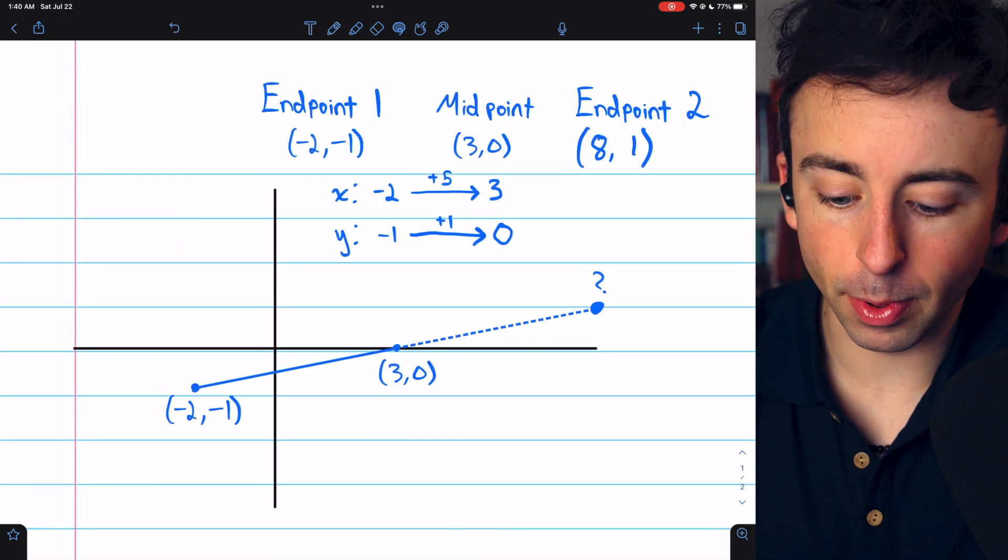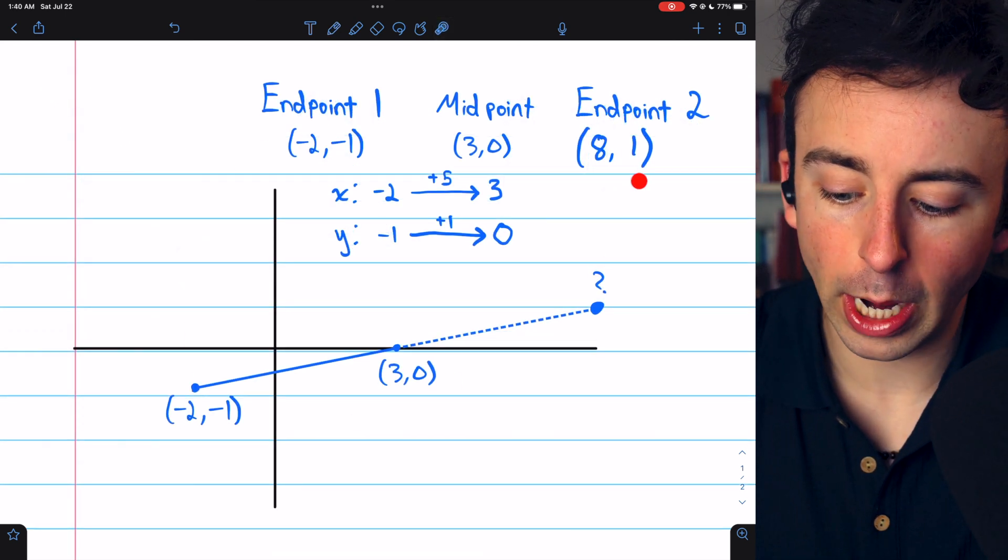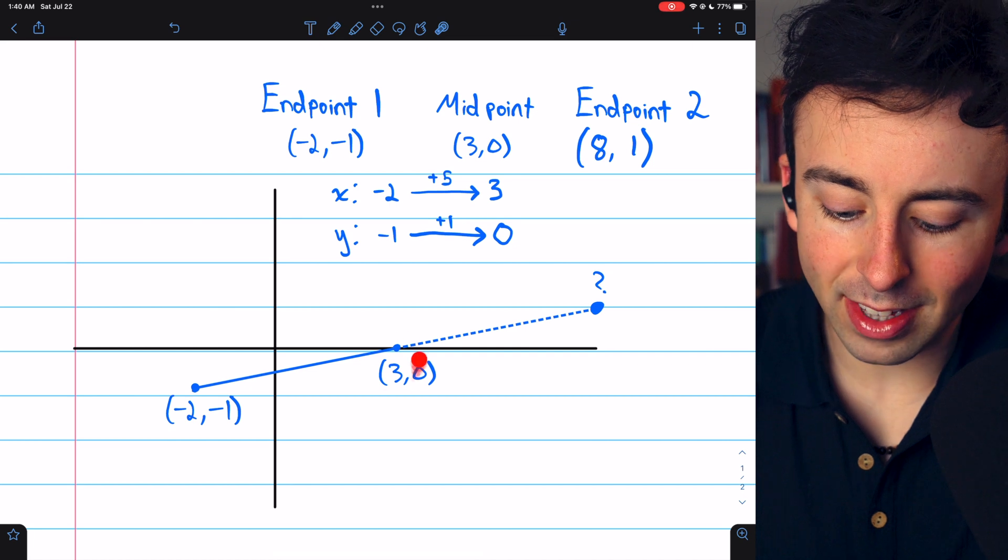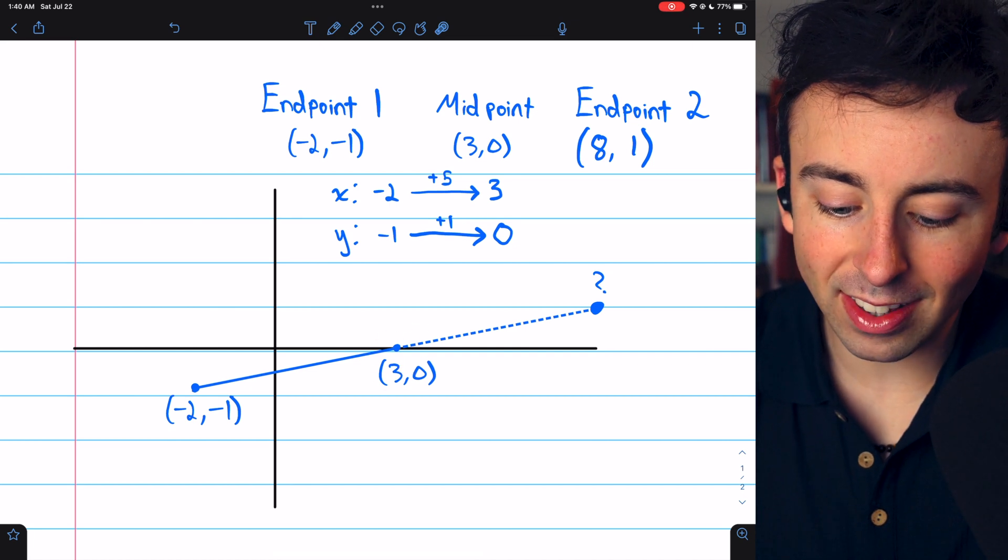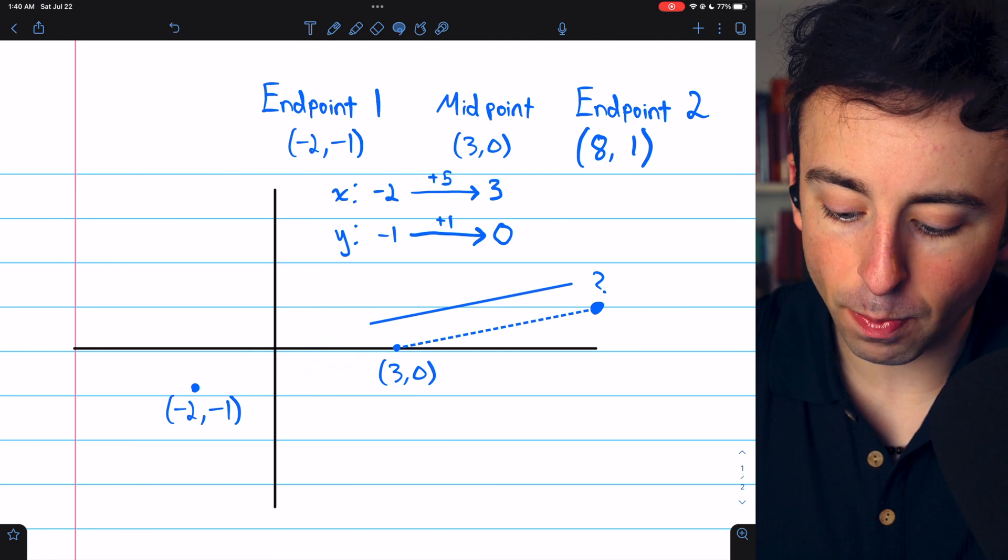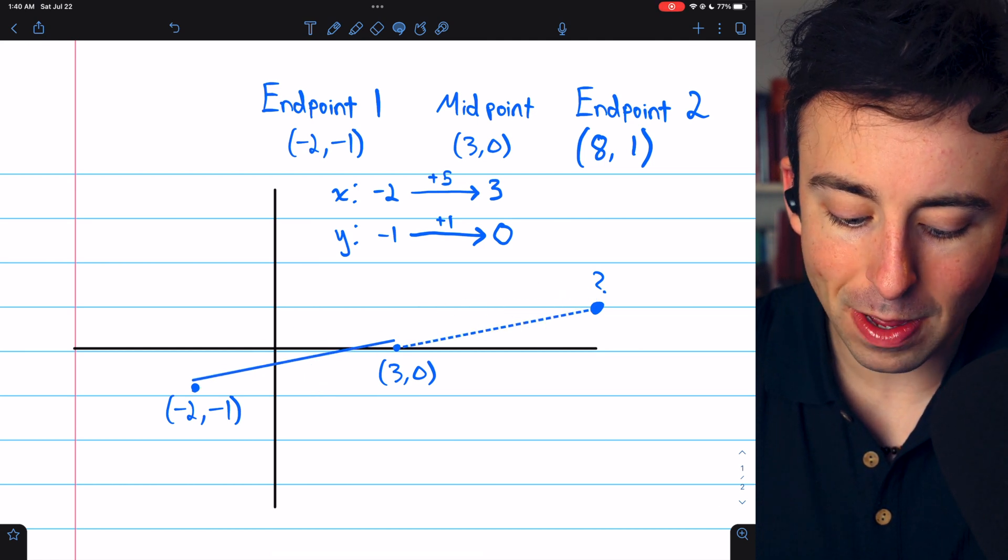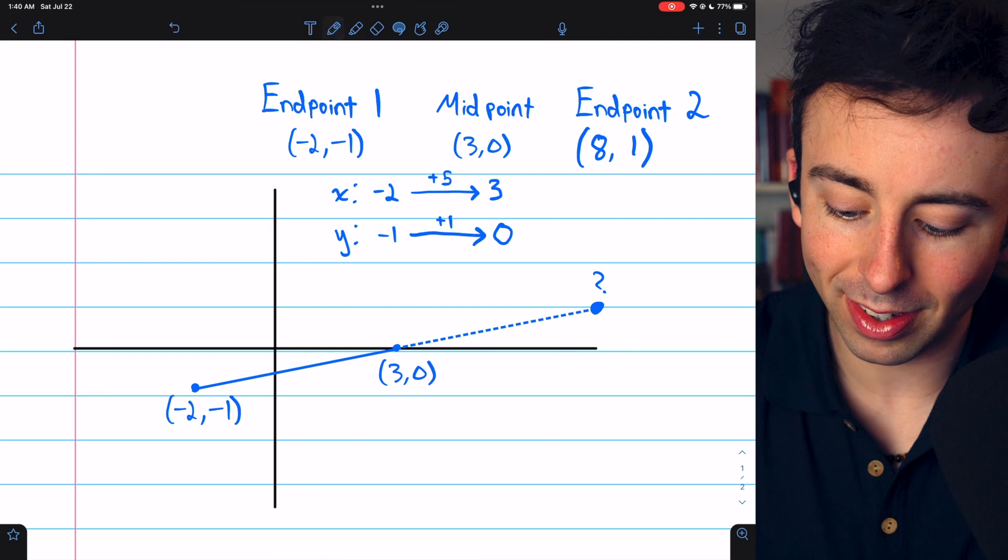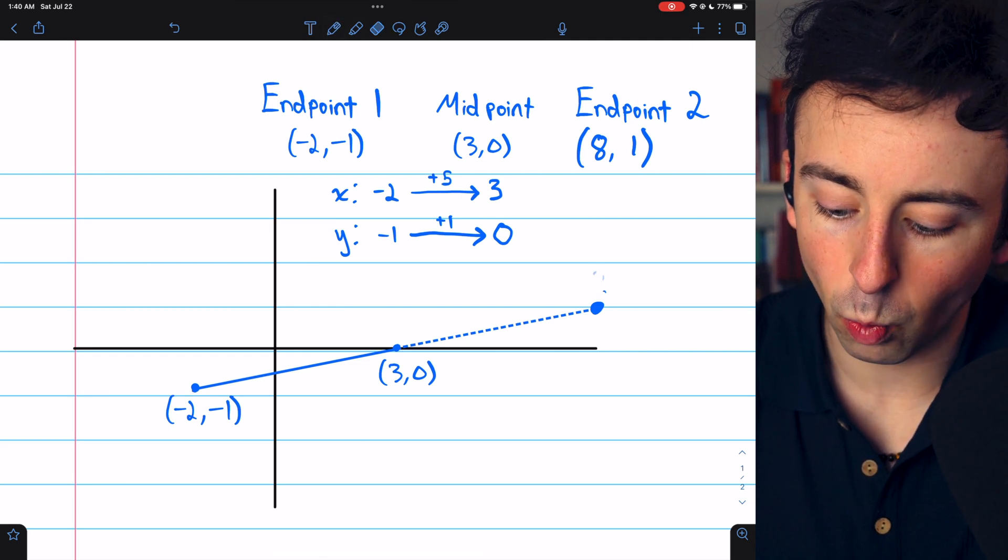It really is that simple. Here's a picture of what's going on. This is the given endpoint. This is the given midpoint. And since it's the midpoint, all we have to do is duplicate the change between them to get to the missing endpoint, which like we said in this case, is the point (8, 1).